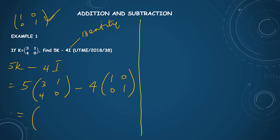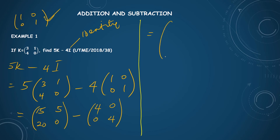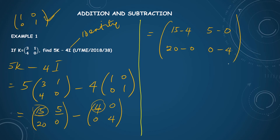Everything minus gives us a subtraction involving matrices, where each element subtracts the corresponding element. First row, first column: 15 minus 4. First row, second column: 5 minus 0. Second row, first column: 20 minus 0. Second row, second column: 0 minus 4. So the result is [11, 5; 20, −4]. This is the answer to UTME 2018, question 38.